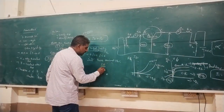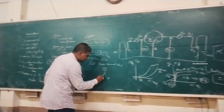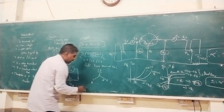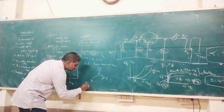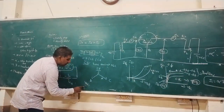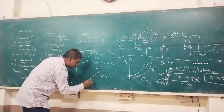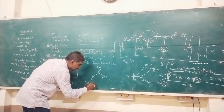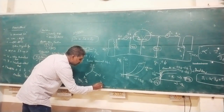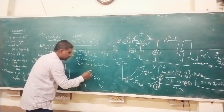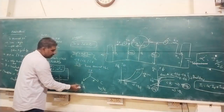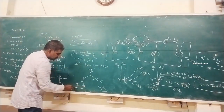In common emitter configuration, the emitter is common to both base and collector. The input has base-emitter voltage VBE and base current IB. The output has collector-emitter voltage VCE and collector current IC.